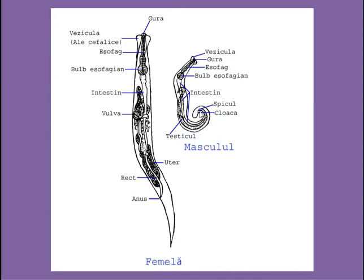The male bears a cloacal opening at the posterior end through which both gametes and digestive wastes are discharged — there is no separate anal opening or gonopore in the male. In contrast, the female has a separate genital pore as well as an anal opening. In the male cloaca there is a copulatory spicule which helps in sperm transfer during mating, but this spicule is absent in the female.